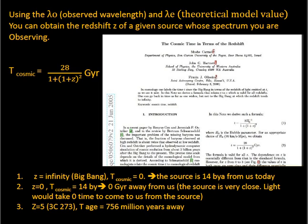Using the observed value and the lambda emitted value, we can obtain the redshift for a given source whose spectrum we are observing. Recently, in a paper by Karl Milly, they showed that the relationship between the cosmic time, which is the age of the universe, and cosmological redshift for Hubble constant value equals 70 is given by this formula. Let's now check this formula.